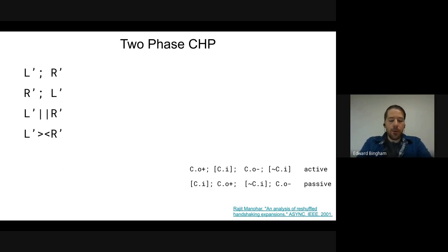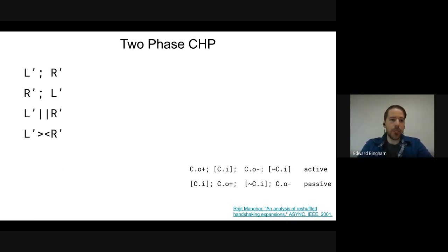We can create a kind of two-phase CHP description of our circuit using this C' and C'' construction. The first thing we have to do is iron out what each composition operator means in relation to these two-phase CHP communication primitives.